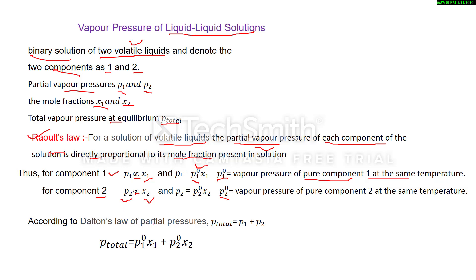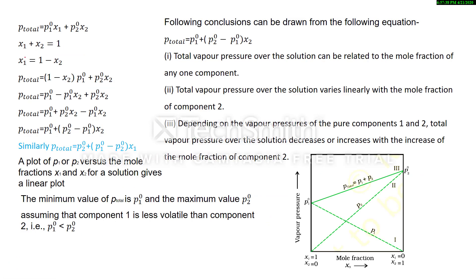According to Dalton's law of partial pressure, P_total = P1 + P2. Substituting the values of P1 and P2, we get: P_total = P01·X1 + P02·X2.